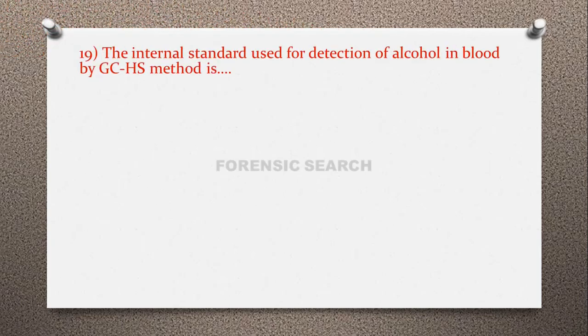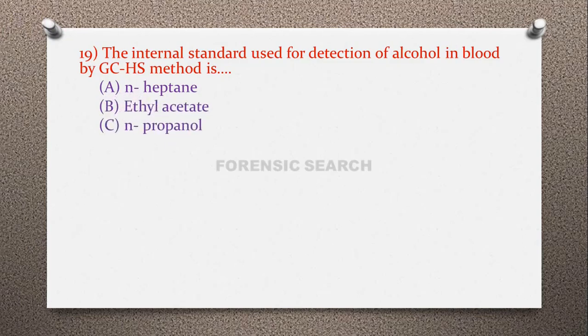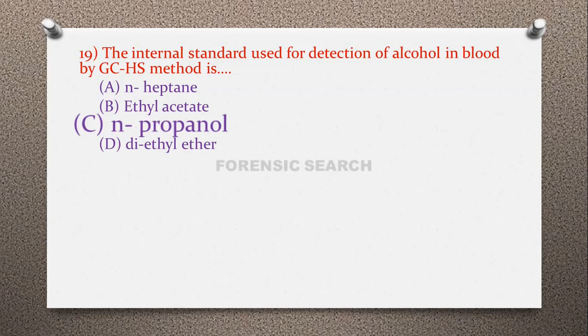Question 19: The internal standard used for detection of alcohol in blood by GC-HS (gas chromatography headspace) method is — option A: n-heptane, option B: ethyl acetate, option C: n-propanol, option D: diethyl ether. The correct answer is option C — n-propanol. The sample preparation uses 0.5 ml blood plus 0.5 ml of a 0.2% weight-by-volume solution of n-propanol.